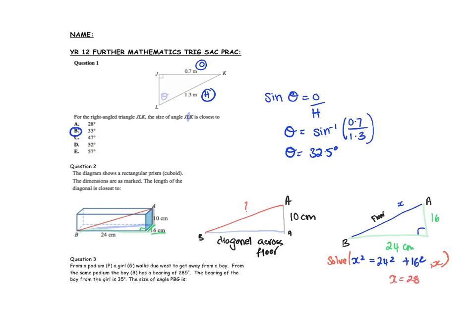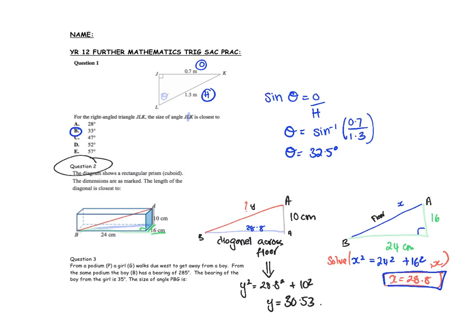Using solve for x we get x to be 28.8. That's okay because it should be bigger than 24 as it's the hypotenuse. Now I know the blue line is 28.8, so I can do Pythagoras again: y squared equals 28.8 squared plus 10 squared, and y equals 30.53. So the length of the diagonal is 30.53 centimeters.